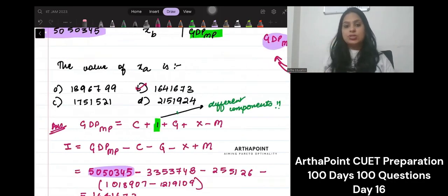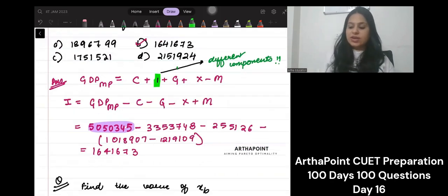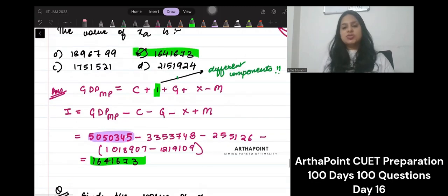So when you will go ahead and you will subtract this, you will get this as the answer: 164,673. So this is the answer to your question.